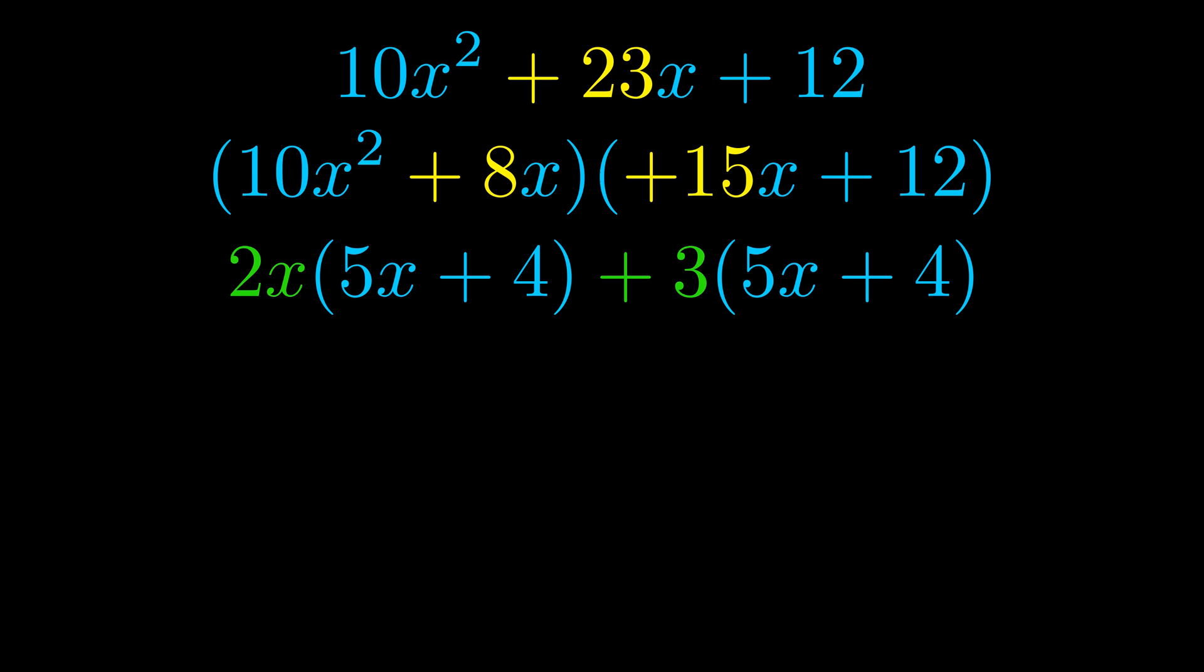Notice also how what remains inside of the parentheses is the same in both cases. The blue values are the same. Those blue values will become one of our factors and we will combine the two green values the GCFs that we pulled out to get the other one. And that is our fully factored equation.